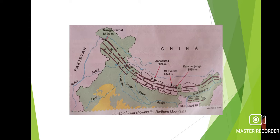Turn to page number 12. First, we will be studying about the Northern Mountains. In the northern part of India lie the mighty Himalayas. You can see the Himalayas colored in dark brown on the map. This is the range of the Himalaya — it is a mighty, meaning very big, mountain.